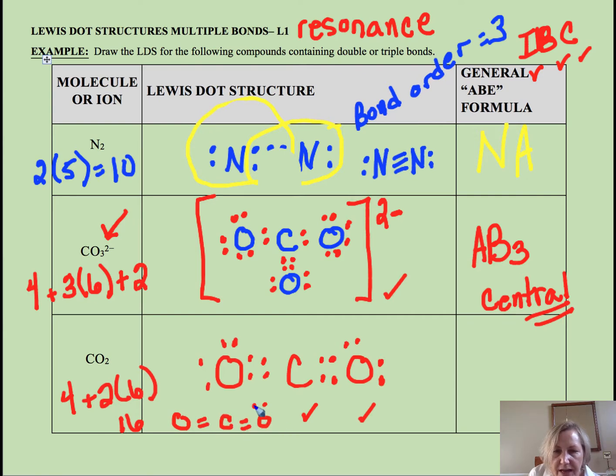So what we have is oxygen with double bonds to CO2. So you might like to draw it that way instead, which is just fine. So each of these have a bond order of two. And this would be an AB2 structure.